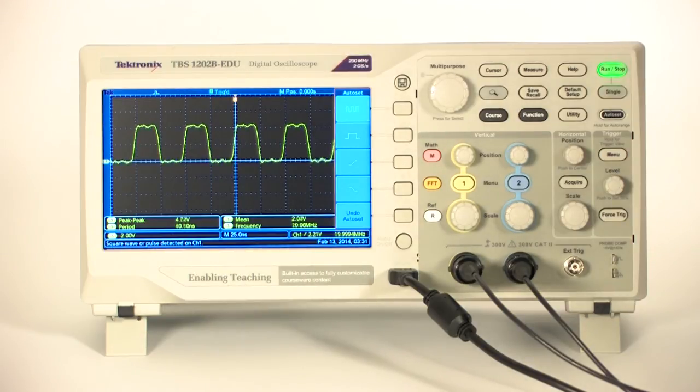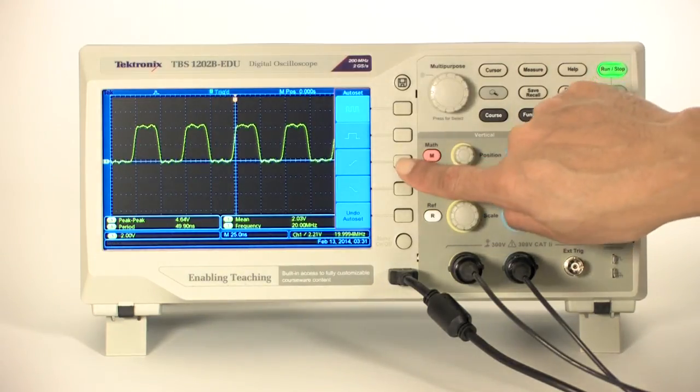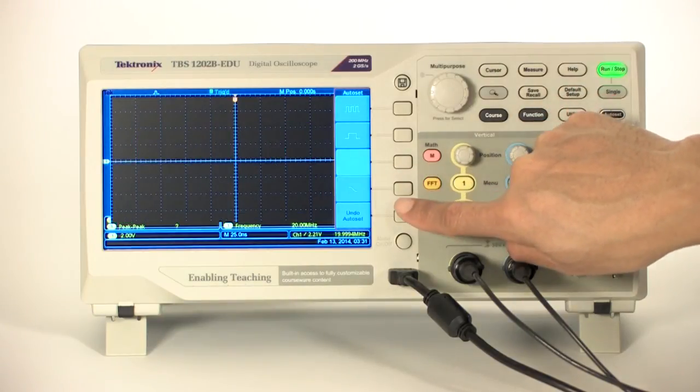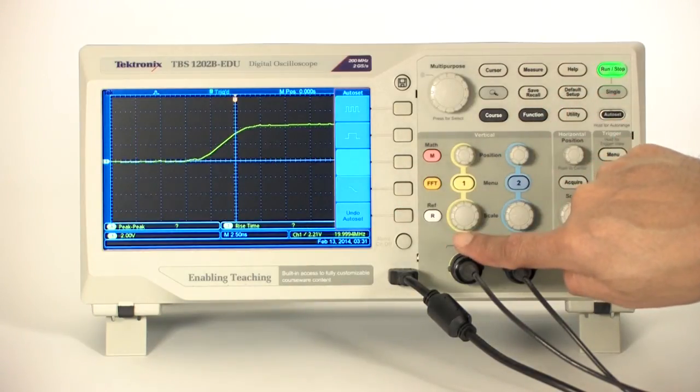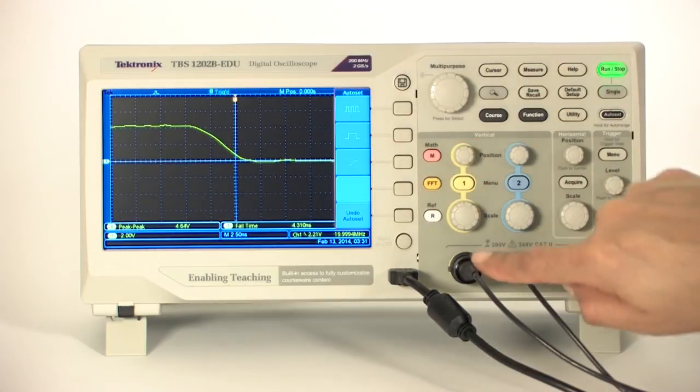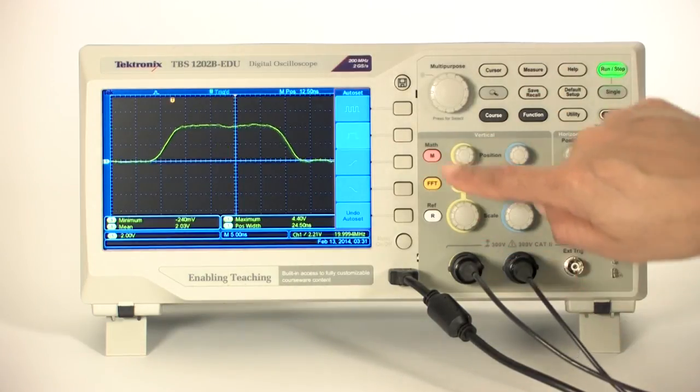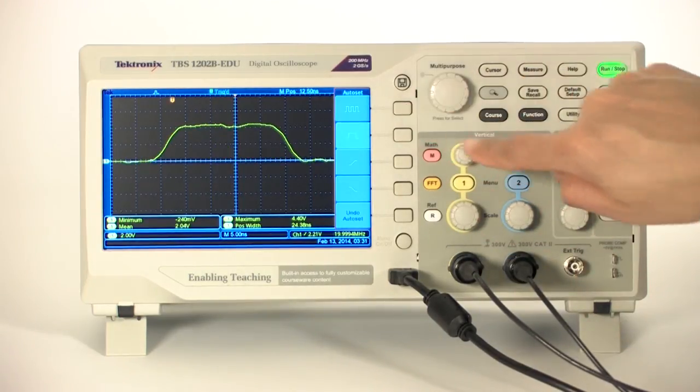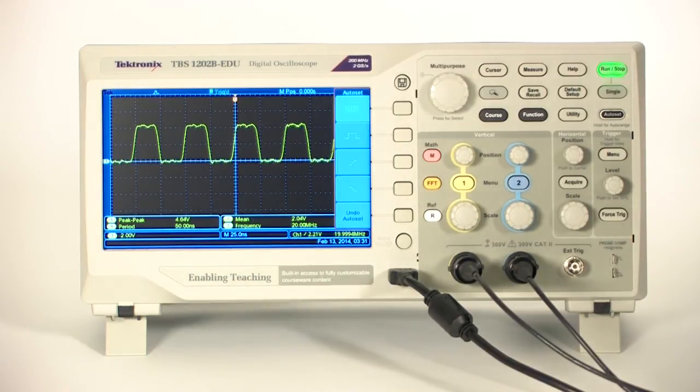On the TBS-1000B, the Auto-Set feature lets you quickly access views of rising and falling edges, or single clock cycle of the clock by pressing the soft keys associated with the menu items on the right of the screen. Most of the TBS-1000B oscilloscope features are accessed this way.